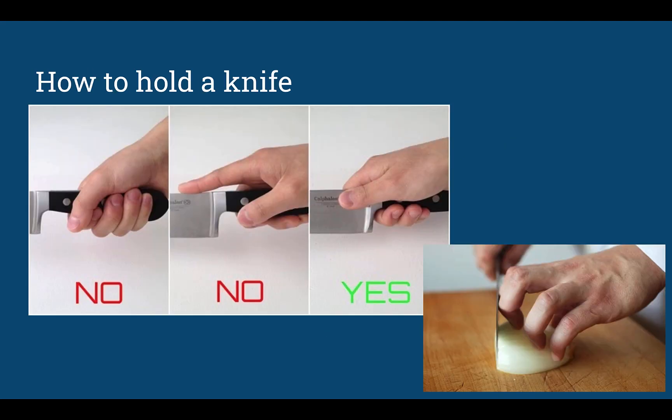All right so proper way to hold a knife is you're going to be holding it close to the handle, up very close to the blade so you have more control. And then your other hand instead of having your hands flat where your fingers can get in the way of the knife, you're going to have a claw so that helps guide the blade of the knife and avoids cuts.